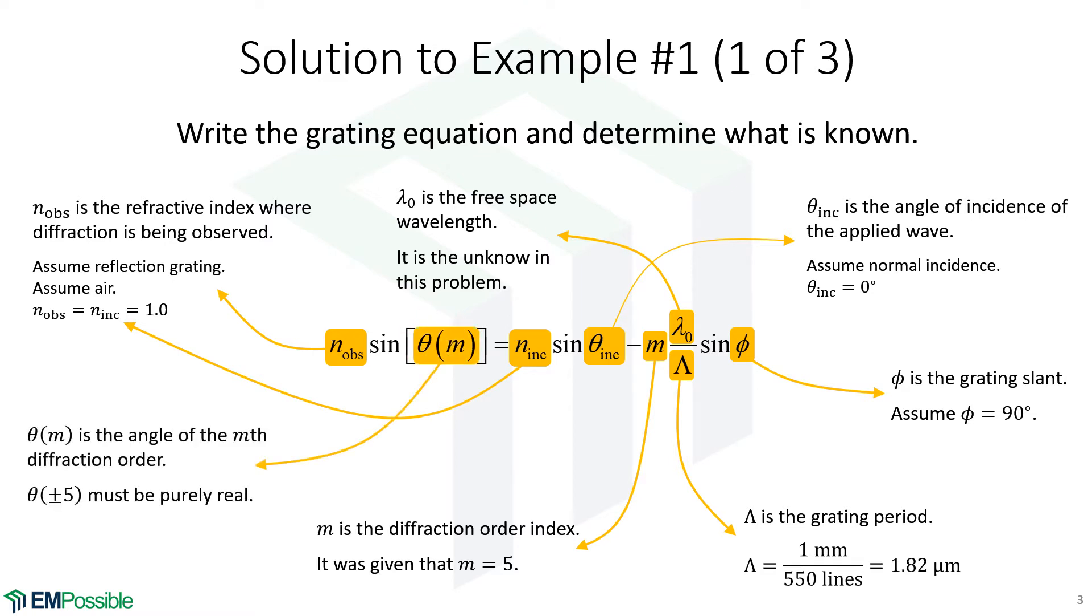And that's really the last thing, that angle. So we just need to make sure that angle can be anything, but we need to make sure that the angle for the plus and minus fifth order modes is a purely real number. So that's the question. What's the biggest value of lambda such that we get a real number for theta?